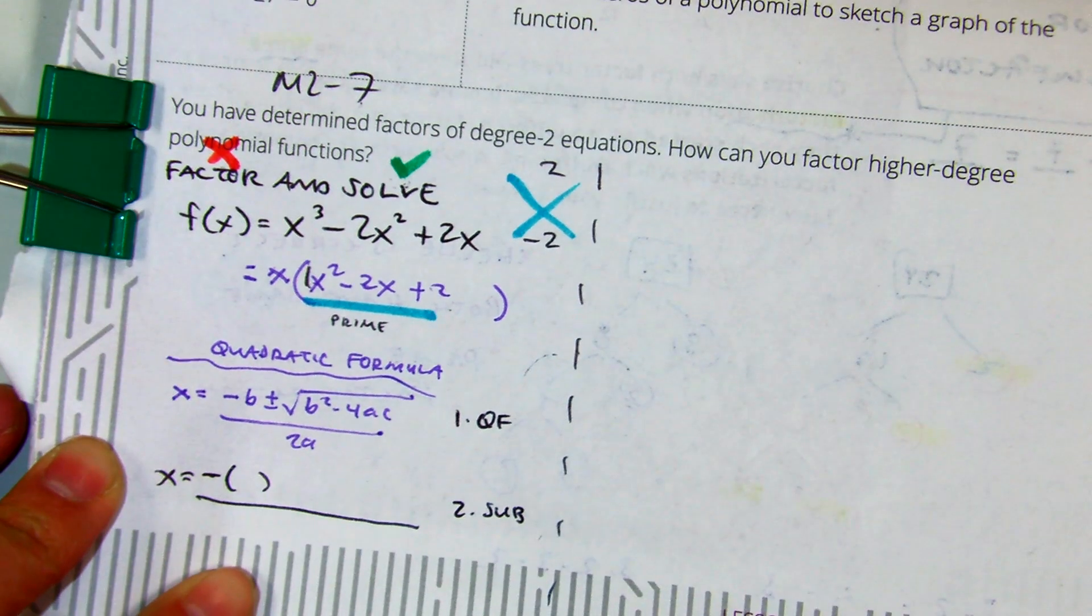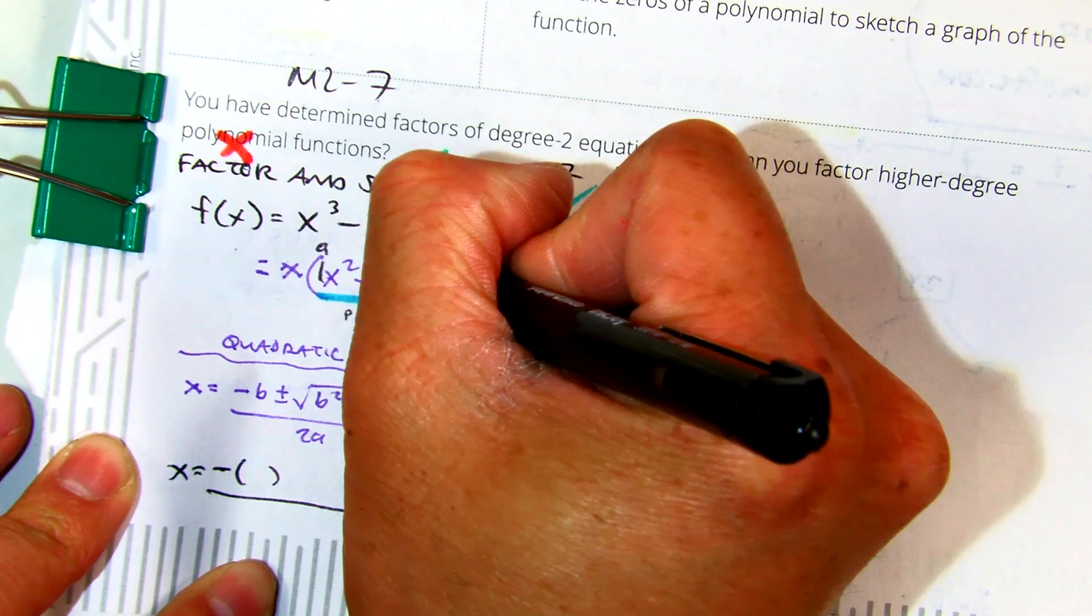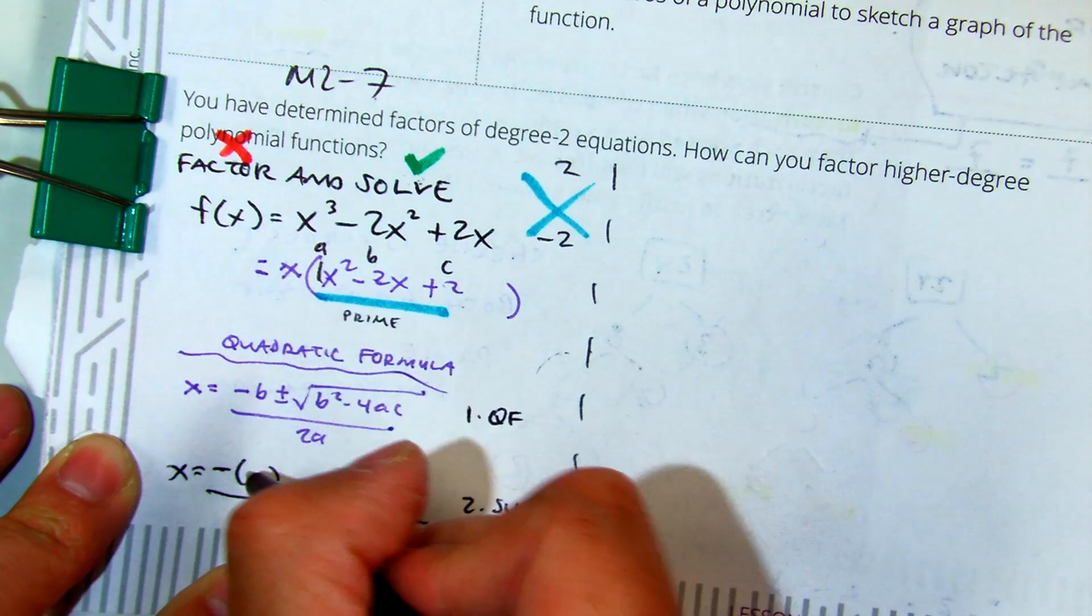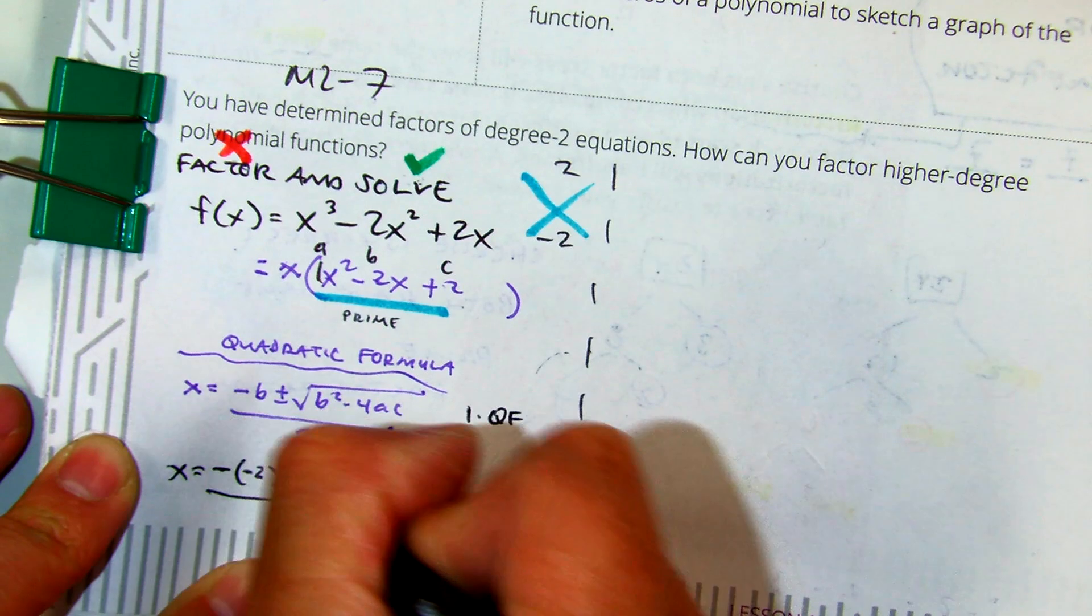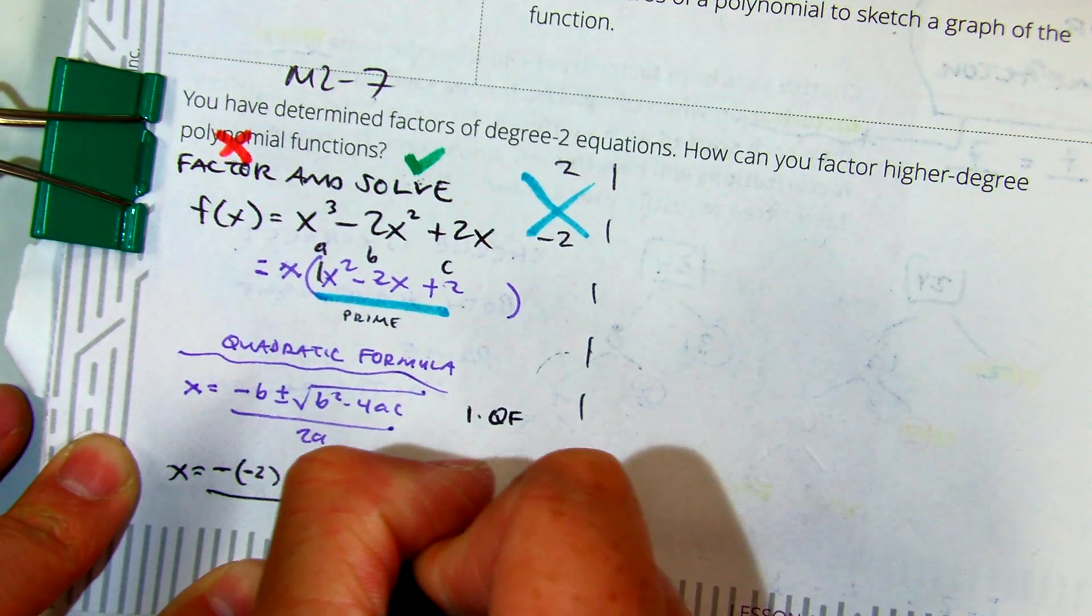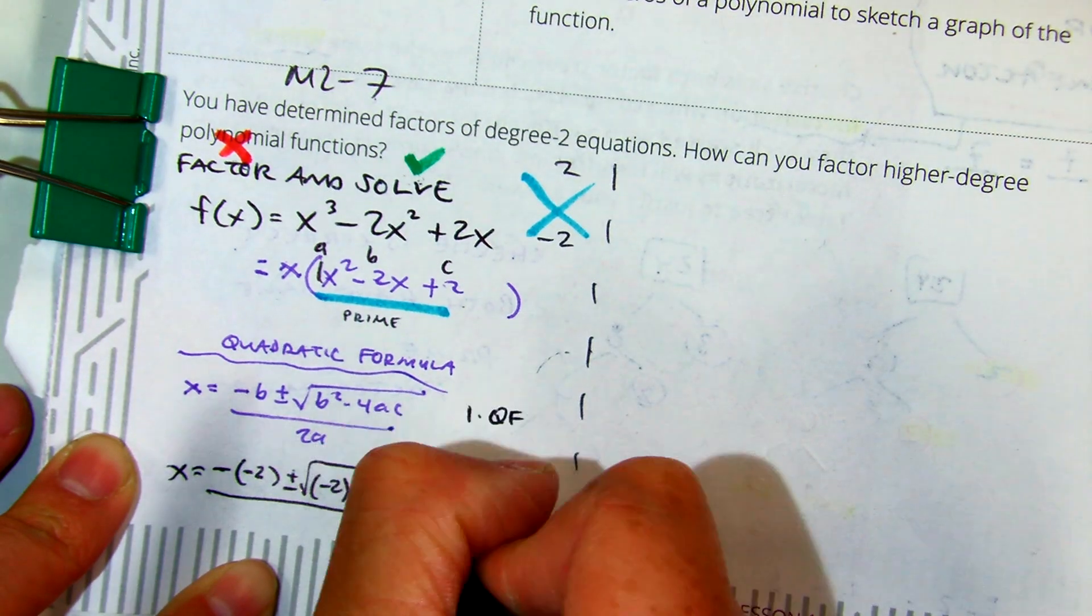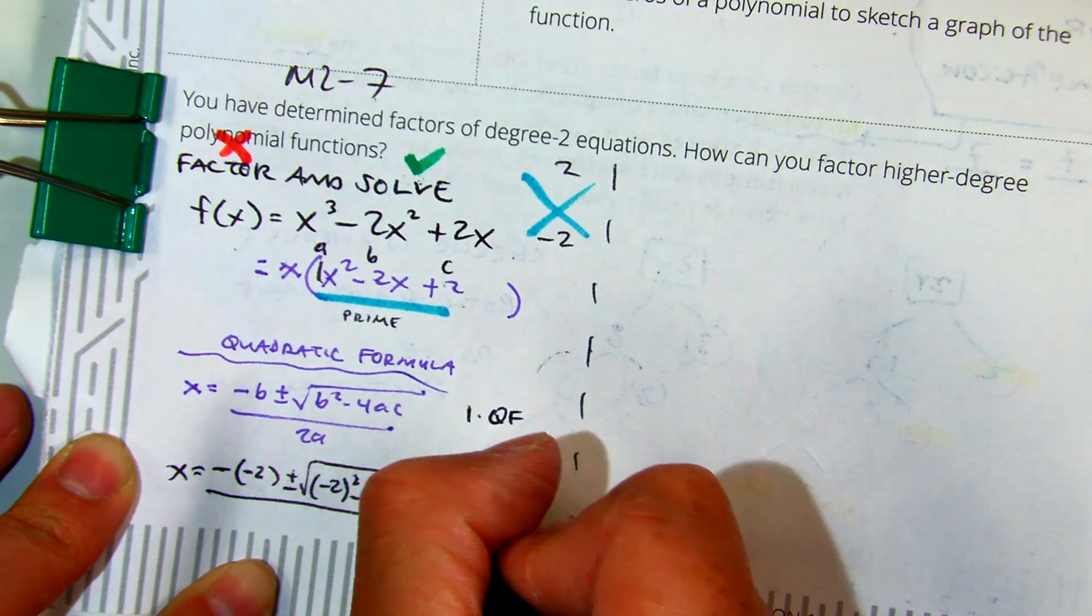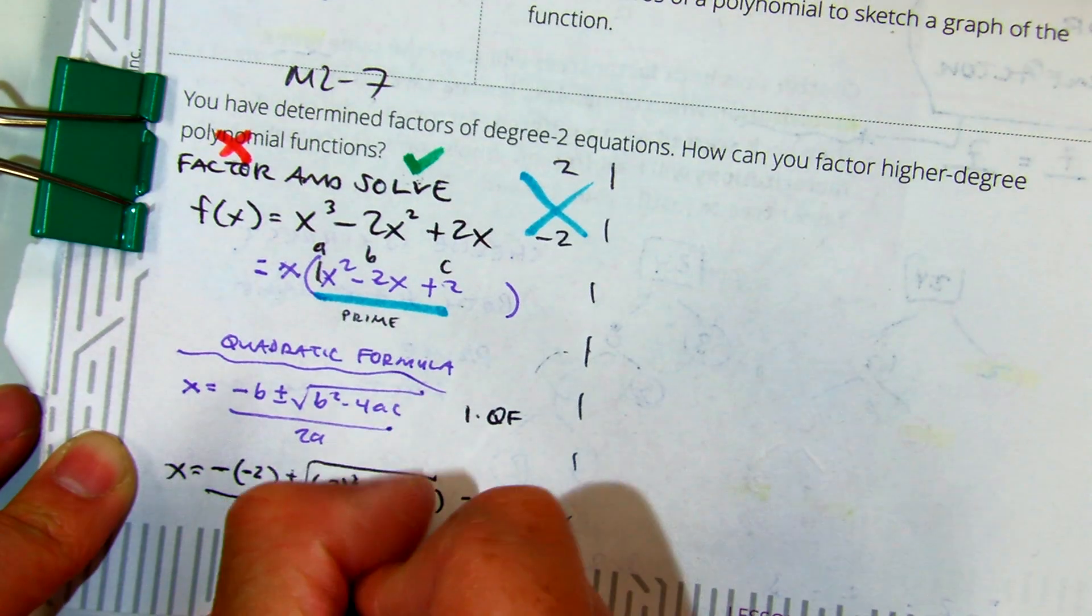Class, what is your B value? Negative 2. So A is 1, B is negative 2, C is 2. I'm going to put in negative 2. My B value is negative 2, so I have negative 2 squared. Put those in parentheses. Minus 4, your A value is 1, and your C value is 2. That's all over 2 times my A value, which is 1.